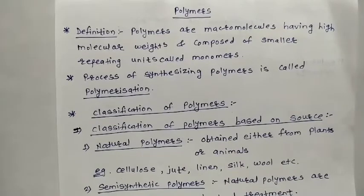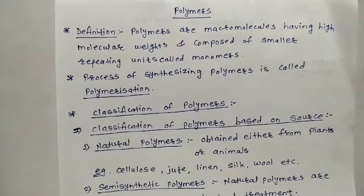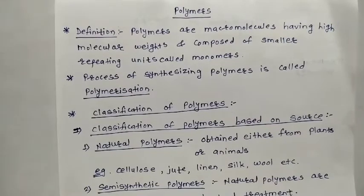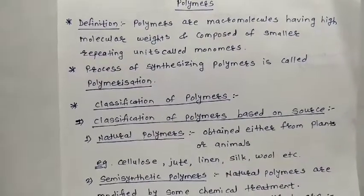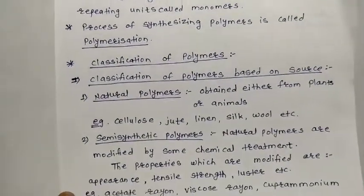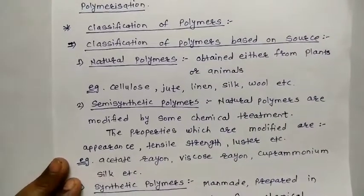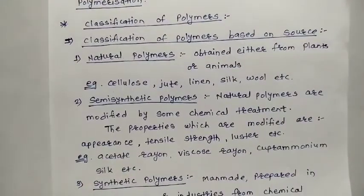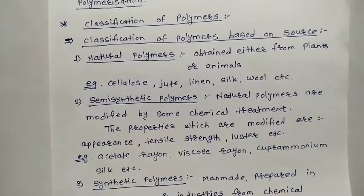The process of synthesizing such polymers is known as polymerization. Now, the classification of polymers has four types. The first type is classification based on source — that is, from which it is obtained. Depending on that source, polymers are classified into three types.